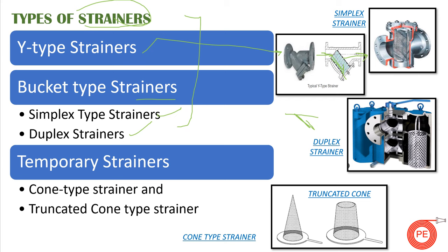The third type is temporary strainers. As the name suggests, these are temporary strainers placed across equipment during commissioning or maintenance phases. Once commissioning or maintenance is over, they are removed, but they are important for saving equipment from solid debris. Temporary strainers include the cone type strainer, which looks like a cone, and the truncated cone type strainer. These are used across industry depending on requirements, placed before equipment to meet operational needs.